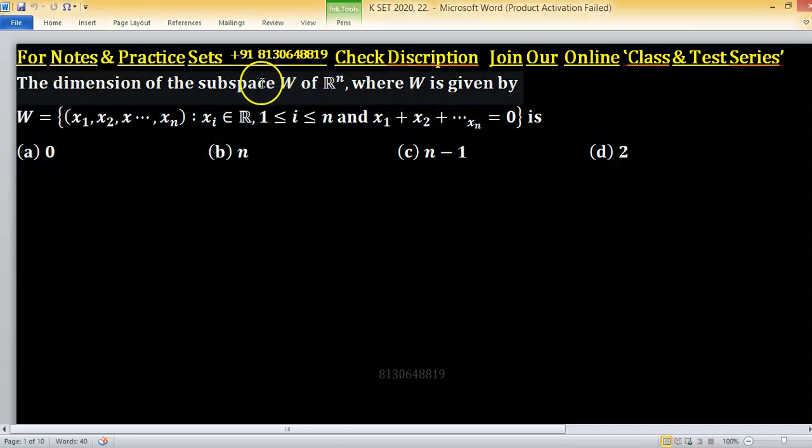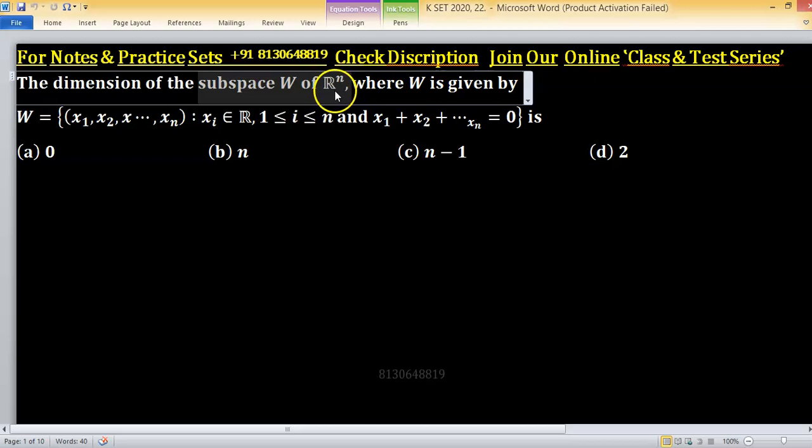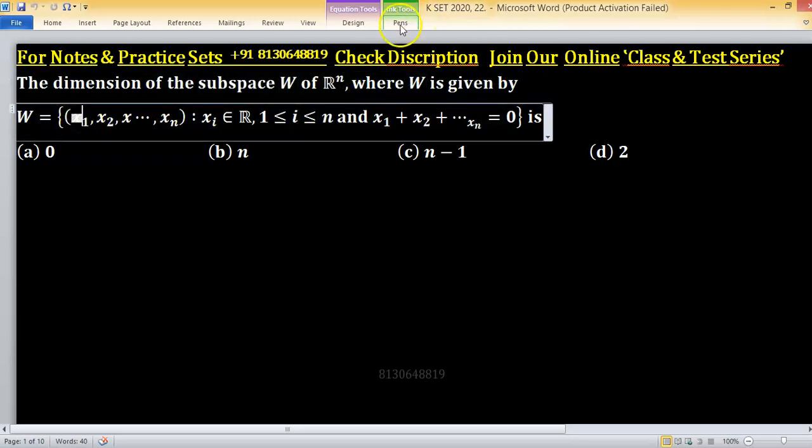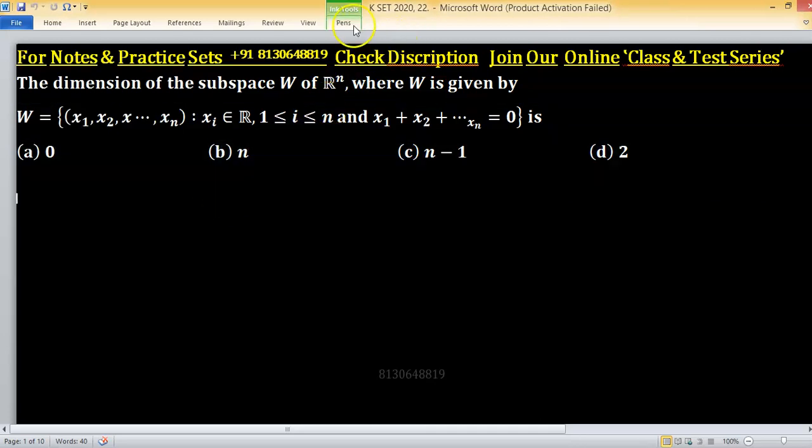The dimension of subspace W of R^n where W is given by this set. So we have to find dimension of this set and dimension is number of independent choices.